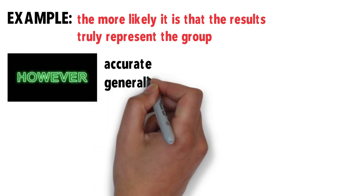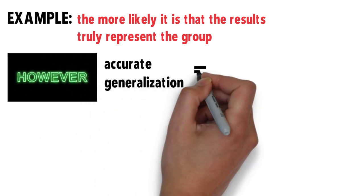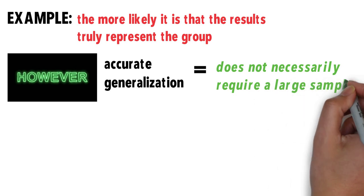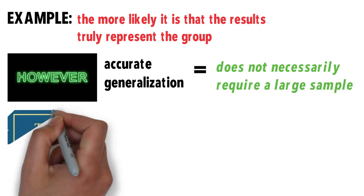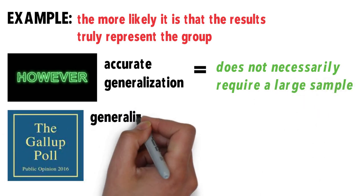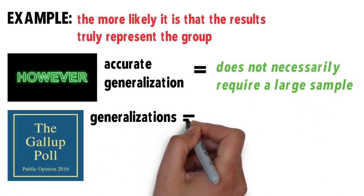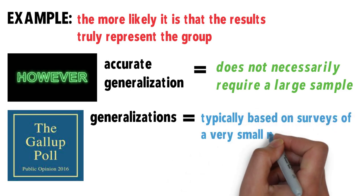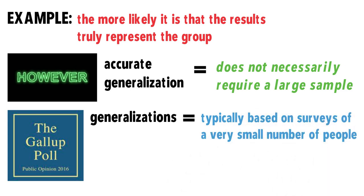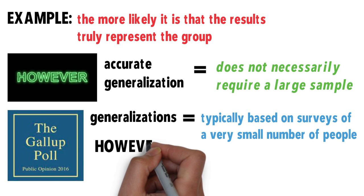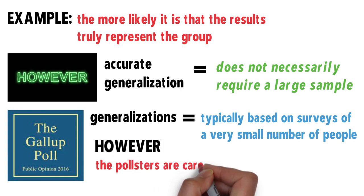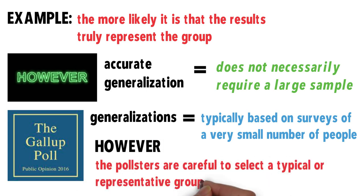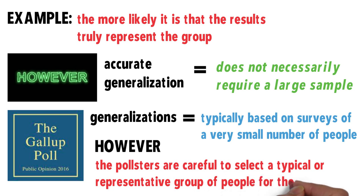However, an accurate generalization does not necessarily require a large sample. In the Gallup opinion polls, generalizations are typically based on surveys of a very small number of people. However, the pollsters are careful to select a typical or representative group of people for their sample.